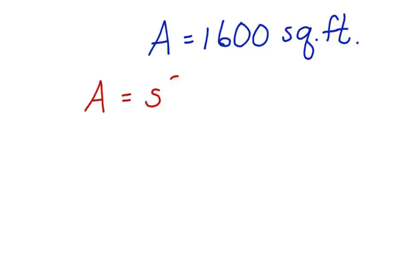What if I said that the area was 1,600 square feet? Again, we can work in a similar way as we did before. We do area equals side squared. Substitute 1,600 in for the area equals side squared.